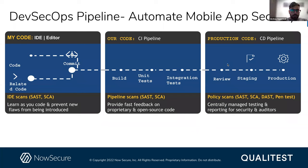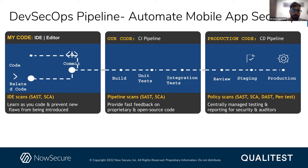Right from the developers trying to write secure code through your pre-build and post-build activities — once you're writing the code, you can perform activities like SAST and SCA. Then comes your CI pipeline, where you can perform SAST and SCA again, and then in production you can perform dynamic application security testing and pen testing of the production-ready builds.